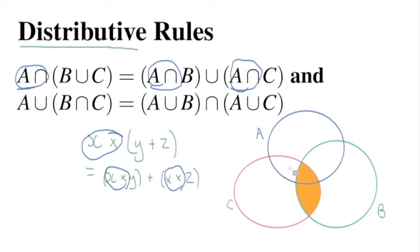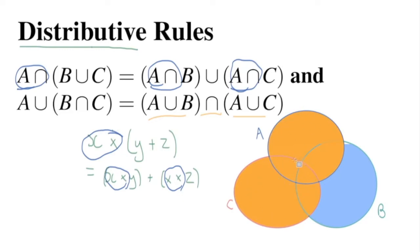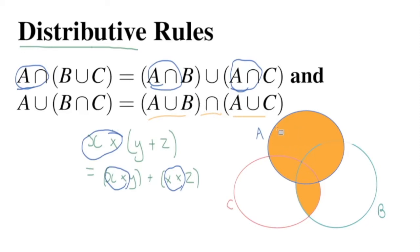For the second distributive rule, B intersect C gives that overlapping area, and union with A gives a lollipop shape. Going from the other direction: A union B is the total area of A and B, and A union C is the total area of A and C. Taking the intersection of those two shapes excludes any region that was only in one of them, and we again end up with the same lollipop shape, showing these two expressions are equivalent.